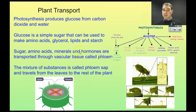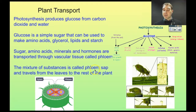Sugars, amino acids, minerals, and hormones are all transported through a vascular tissue in plants called phloem. We've talked about xylem — the other side of xylem is phloem. The mixture of these substances and water is called phloem sap, and it travels from the leaves to the rest of the plant. Whereas xylem has water and minerals moving from the roots up to the leaves, the phloem can move both ways — it can go up and down depending on what's happening in the plant.